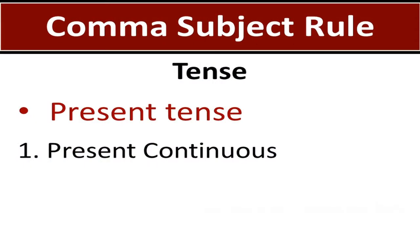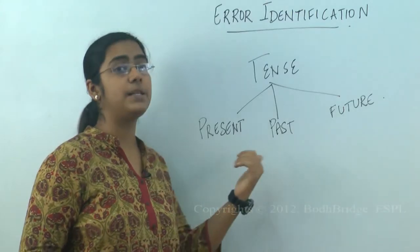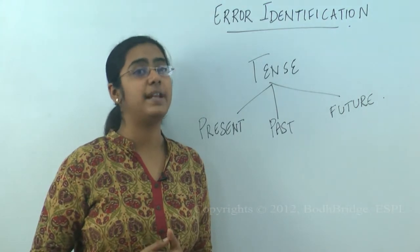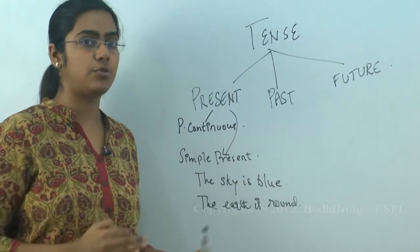The other kind of present usage would be simple present. This is used to denote facts. You state facts that are universally known in simple present tense. Let's look into an example right now. The sky is blue. The earth is round. These are universally acknowledged facts. Yesterday, it was the same.